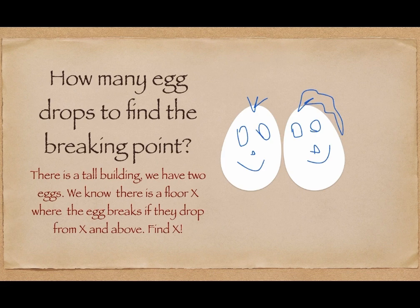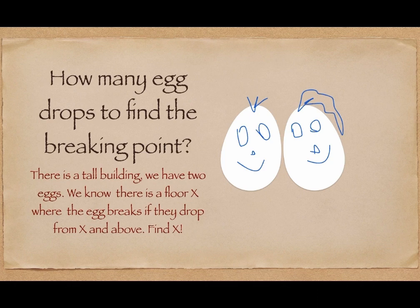We have two eggs and a very tall building, and we know that the eggs will break if we drop them at a specific floor or higher. We want to find the first floor at which they break — let's call it floor X. At the same time, we want to minimize the number of examinations we make to find floor X.